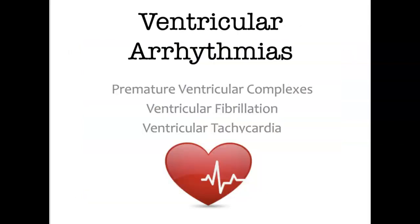Ventricular arrhythmias originate in the ventricles, not from the SA node, so you do not see a P wave. Ventricular rhythms are life-threatening arrhythmias and require immediate intervention. The QRS complexes are often wide and bizarre in appearance. The three types we'll look at are premature ventricular complexes, ventricular fibrillation, and ventricular tachycardia.